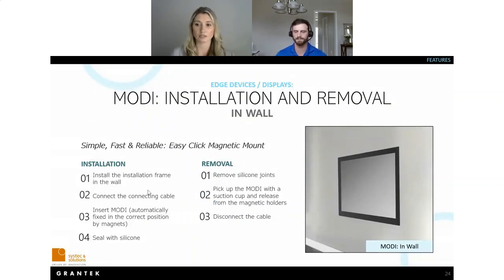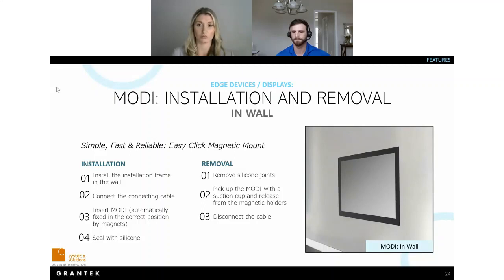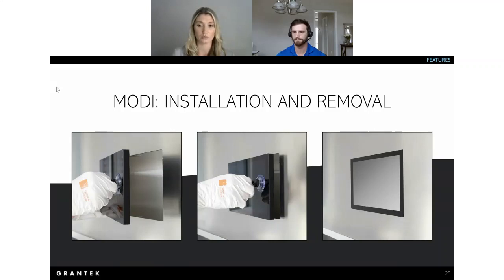The Modi can be installed two ways: in-wall or flush-mounted. Customers typically install it in-wall for new construction, though it is relatively easy to install in an existing facility as well. The installation process involves inserting the insulation frame into the wall, connecting the cables, inserting the Modi, and sealing with clean room silicone. Removal is also simple: remove the silicone, use a suction cup to pick up the Modi, release from the magnet holders, and disconnect the cable. Photos show how the suction cup and magnet are used to remove and install the unit.